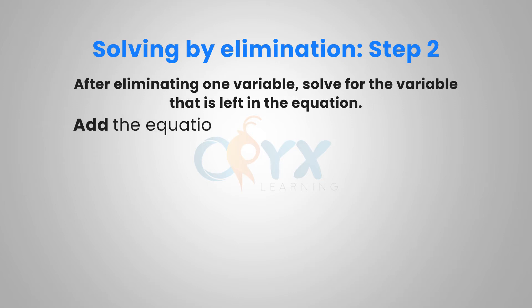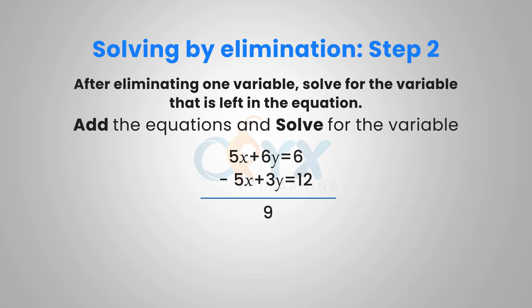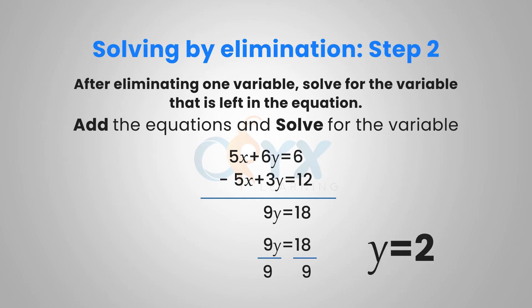We want to add the equations together and then solve for the remaining variable. In this example, we have 5x + 6y = 6 and −5x + 3y = 12. Adding the equations together, 5x + (−5x) = 0, eliminating the x variable, and we're left with 9y = 18. Dividing both sides by 9 to isolate y, we get y = 2.